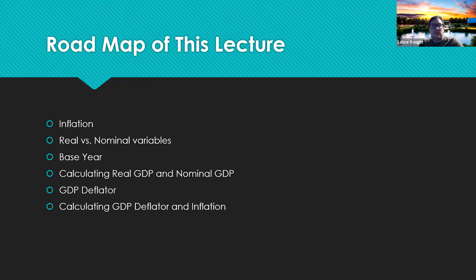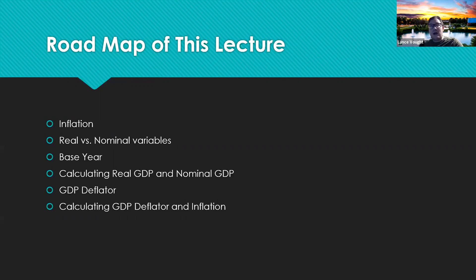We'll calculate real and nominal GDP with a formula, then calculate what's known as the GDP deflator, which is an inflation measurement and an example of a price level, and then calculate the inflation rate. The last lecture focused on what macroeconomics is and what measurements we use for determining macroeconomic performance, particularly GDP. We talked about the definition, all the components — consumption, investment, government spending, net exports — and now we're converting it to something actually usable from a quantitative standpoint so we can interpret the status of the economy as it pertains to changes over time.